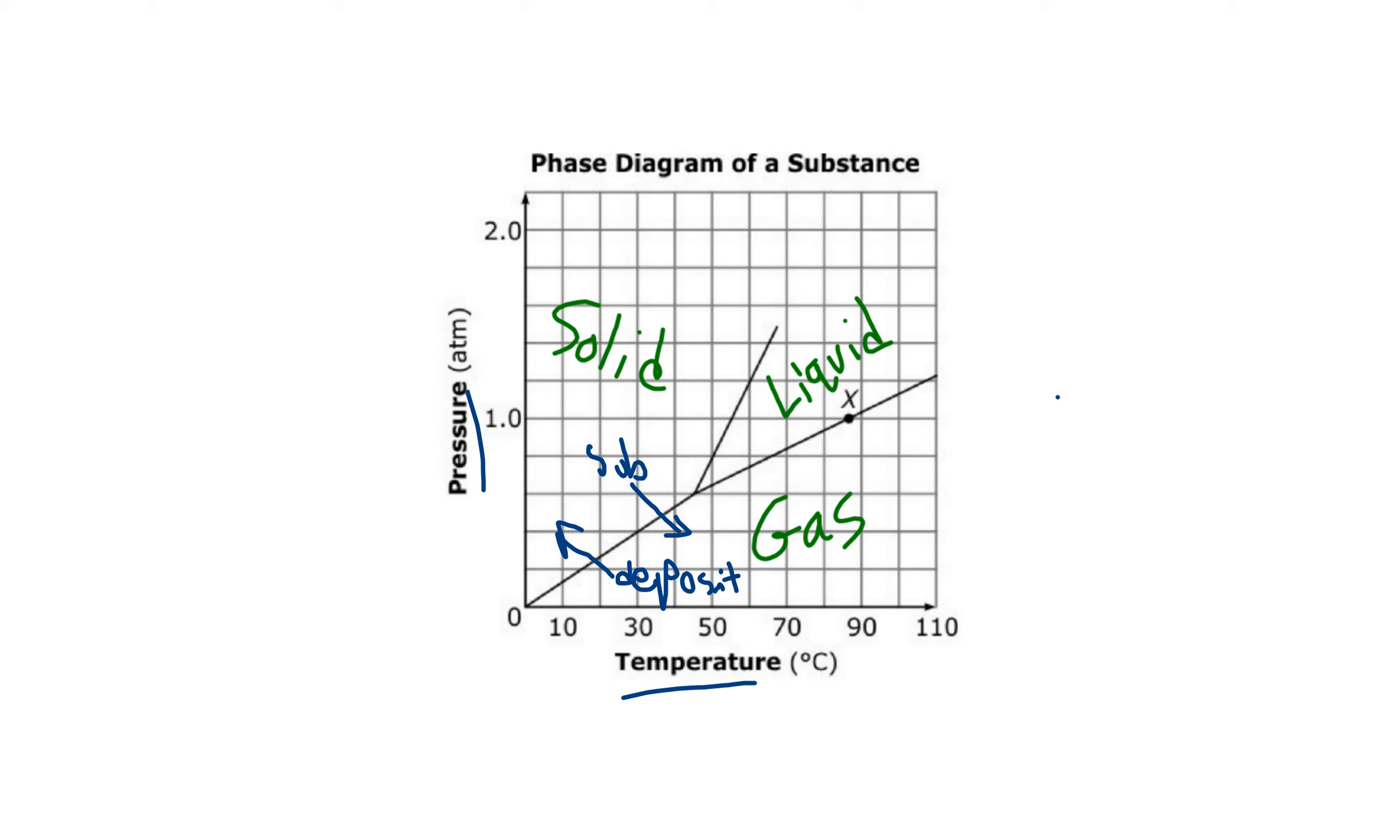If we're going here, we call that condensation, and if we go in this way, we call that evaporation or vaporizing. If we're going this way, we call that melting, and if we're going this way, we call that freezing.